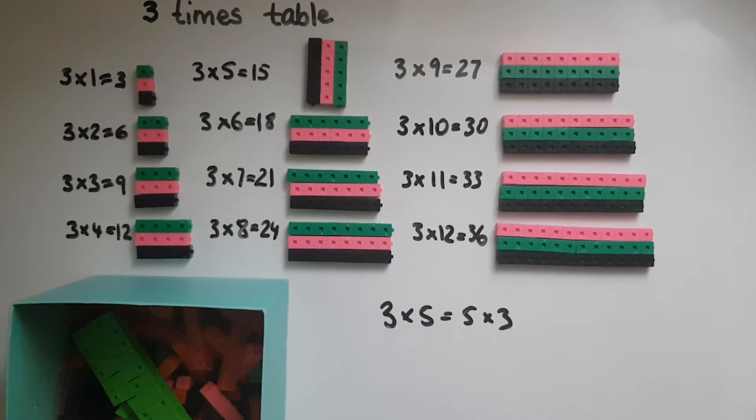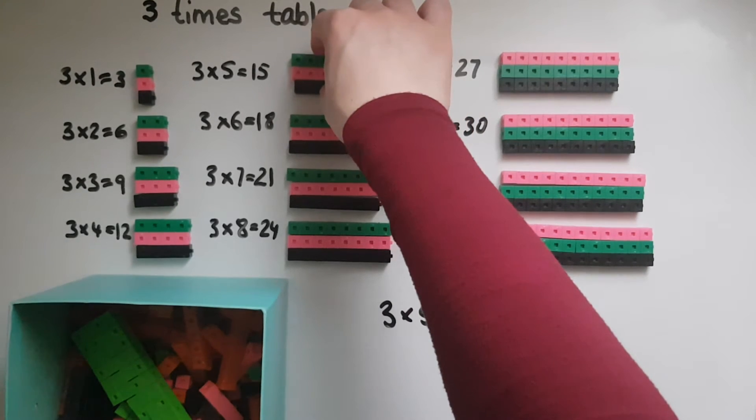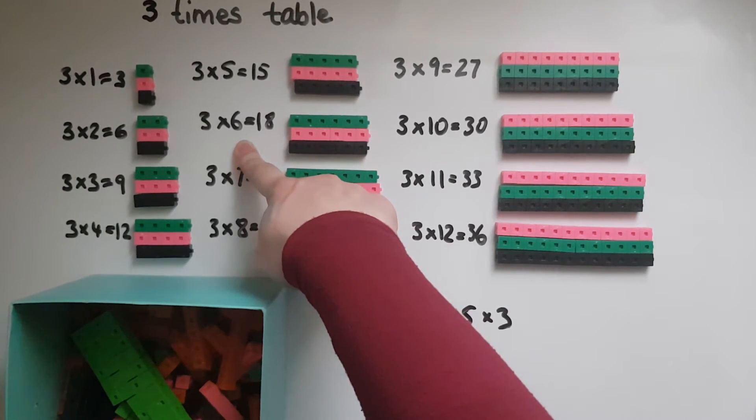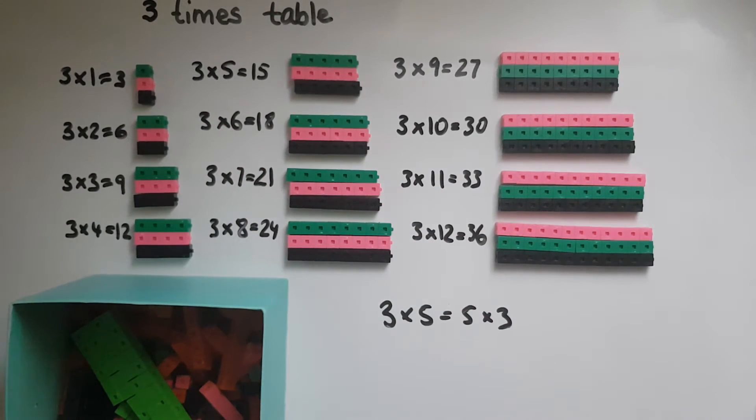So order is not really important. If you want to work out 3 times 6, it's the same as 6 times 3. So whichever is easy for you to work out, that's what you can do, and the answer would be the same.